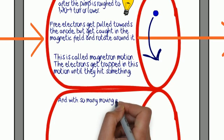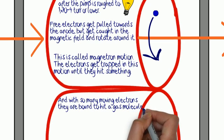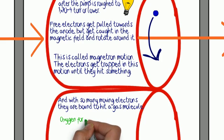And because there are so many electrons moving around in that electron cloud, they're bound to hit a gas molecule eventually. In our example, let's go ahead and use oxygen.